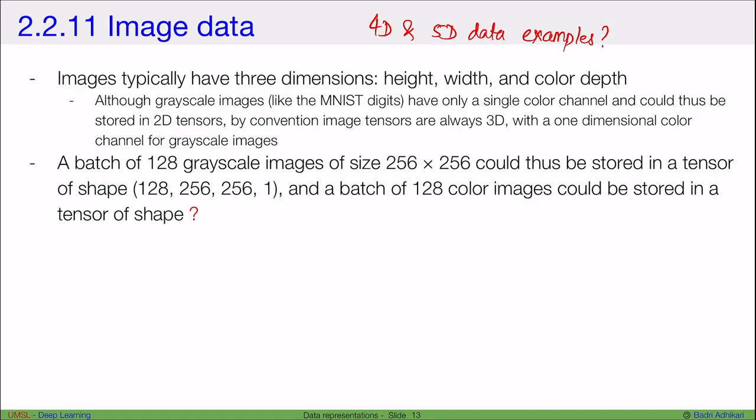We will consider image as the example. Images typically have three dimensions: height, width, and color depth. Why three? Because if you remember, when we look at a picture, we only see two dimensions, right? There's a person sitting, and then we have its height and we have its width. So we only see two dimensions.